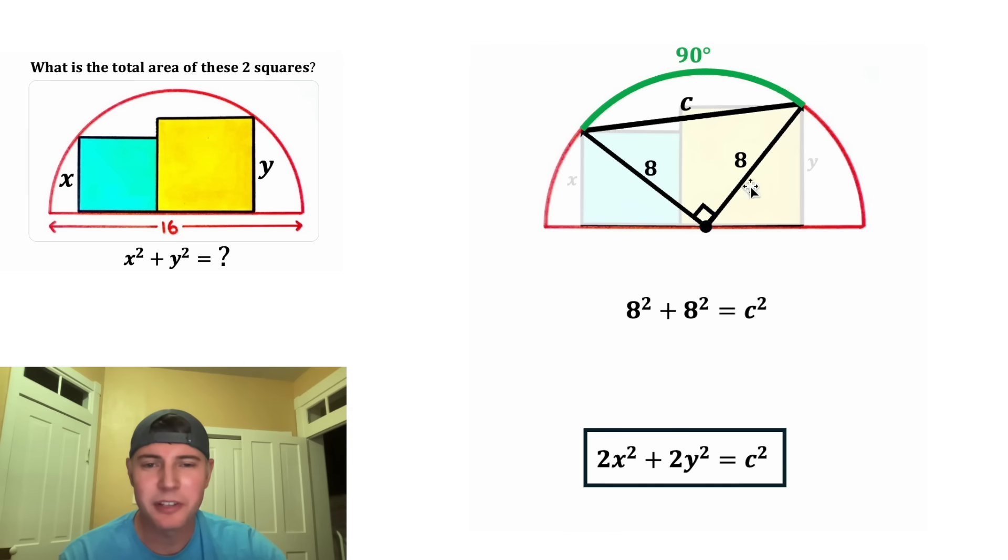It'll be 8 squared plus 8 squared is equal to c squared. 8 squared is equal to 64. 8 squared is equal to 64. And on the right-hand side, we have c squared. And 64 plus 64 is equal to 128. So we have 128 is equal to c squared. This also looks important. Let's put a box around it.